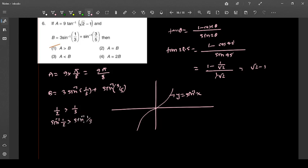Because when you introduce an increasing function to an inequality, the inequality doesn't change. Sin inverse 1 by 2 is pi by 6, which is greater than sin inverse 1 by 3. We need 3 times, so 3 times sin inverse 1 by 3 is less than pi by 2.